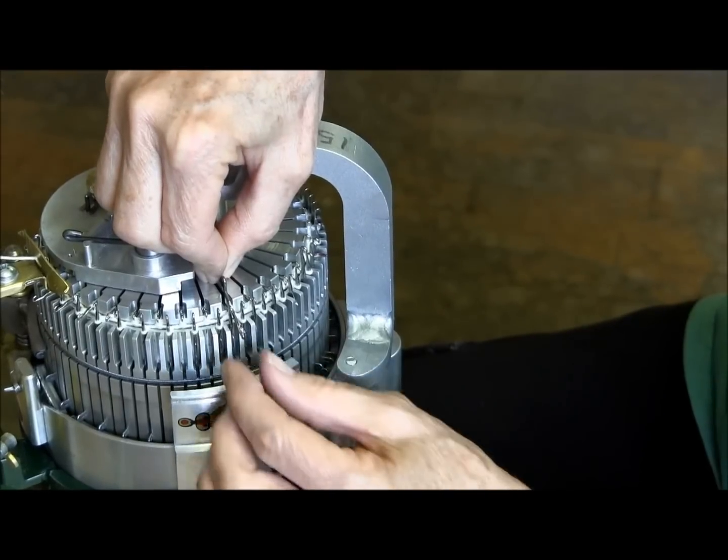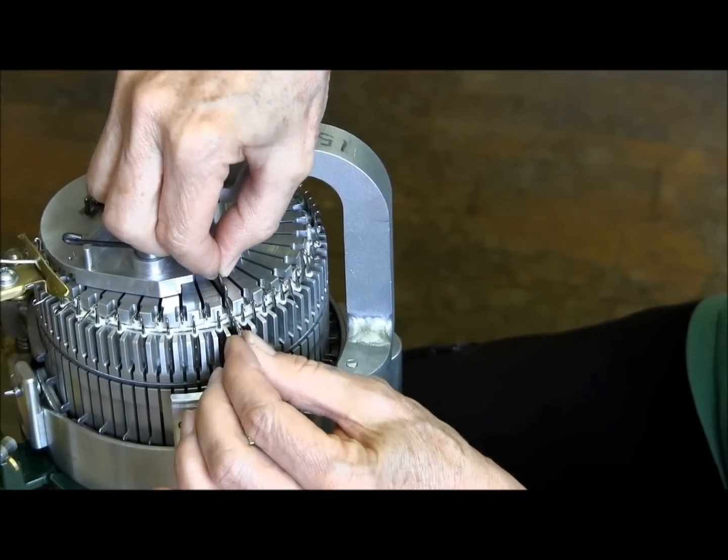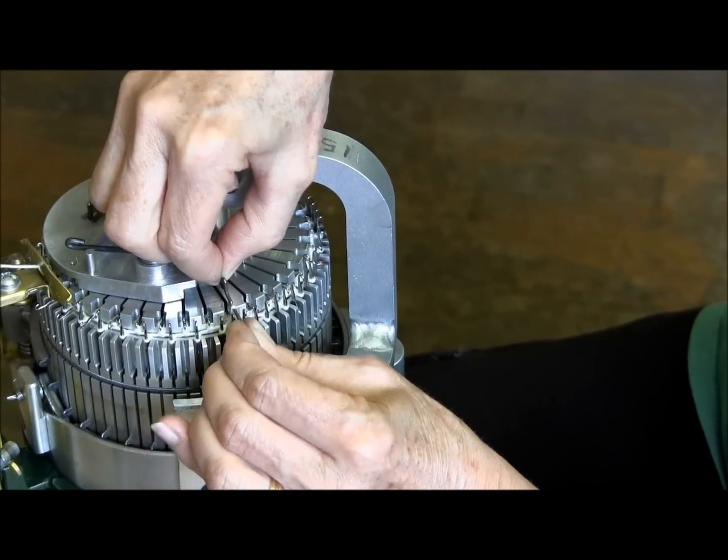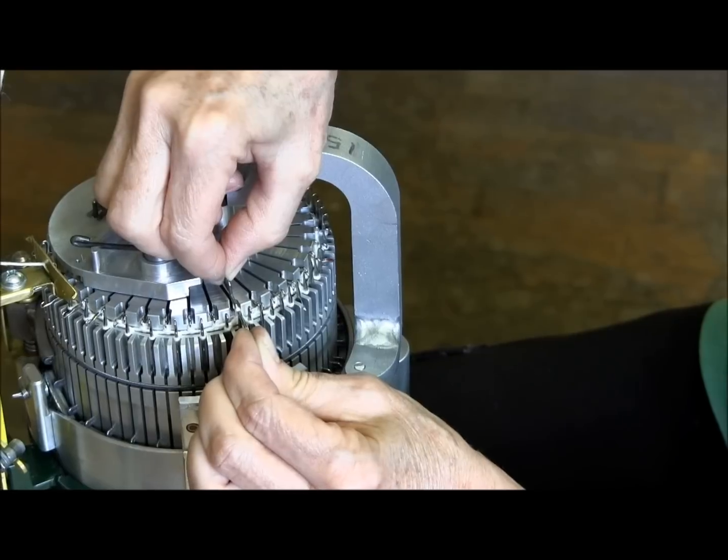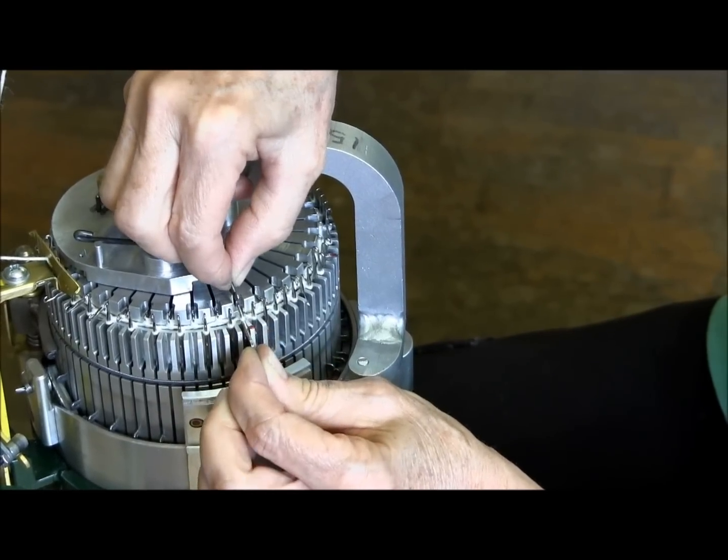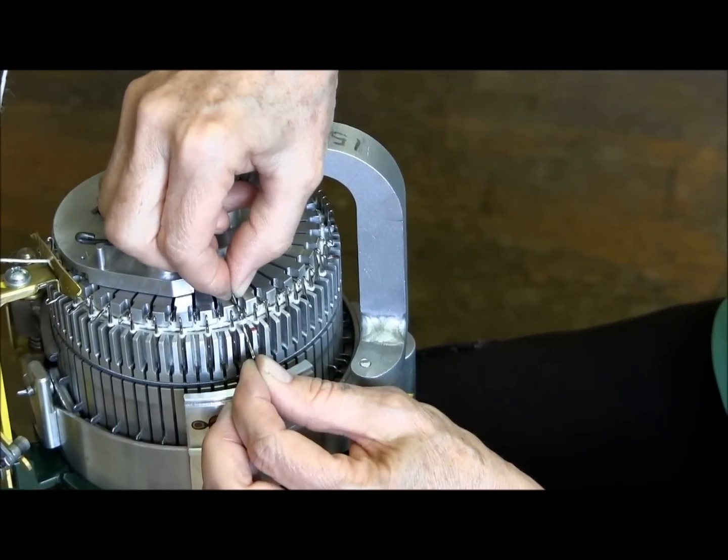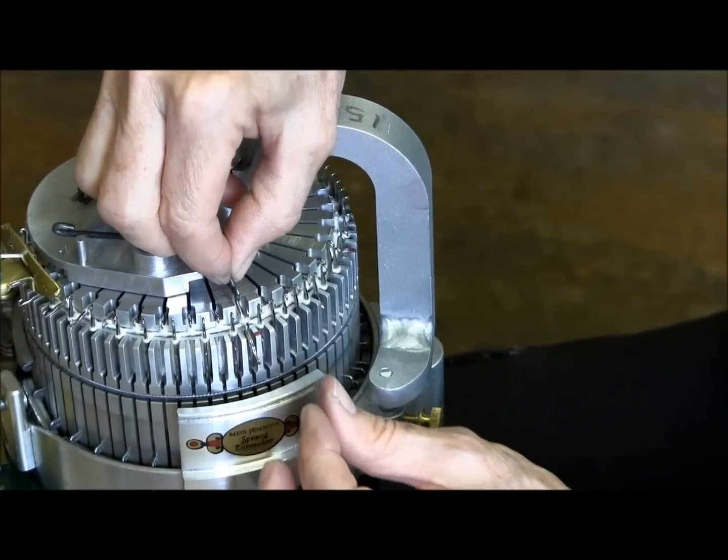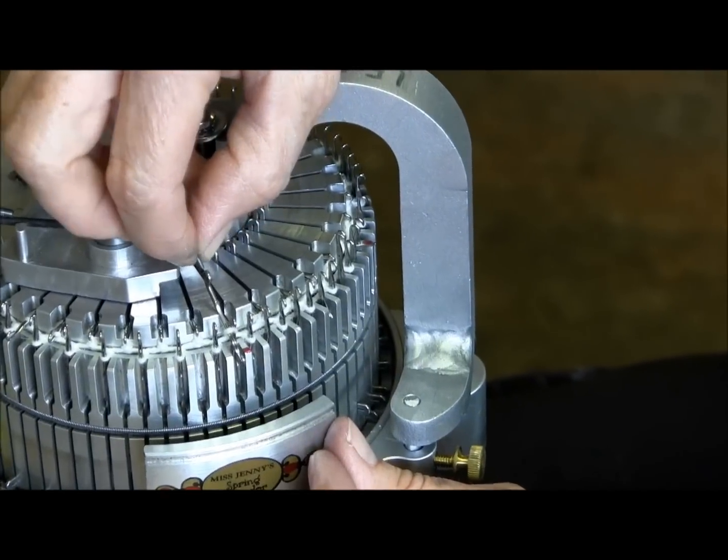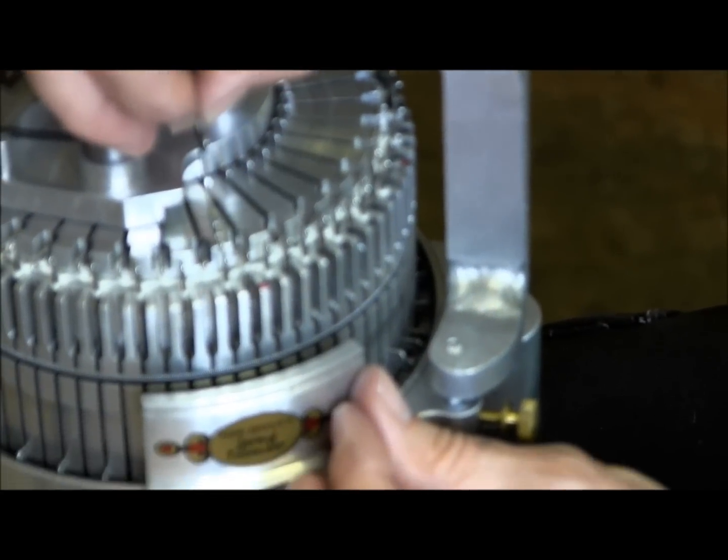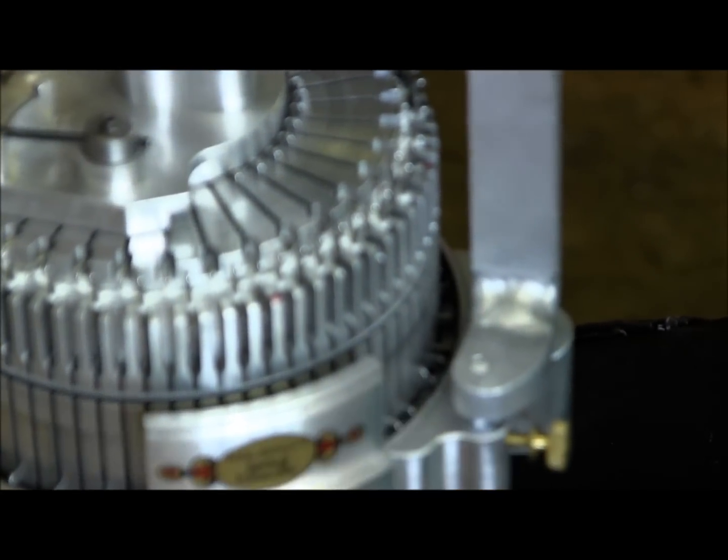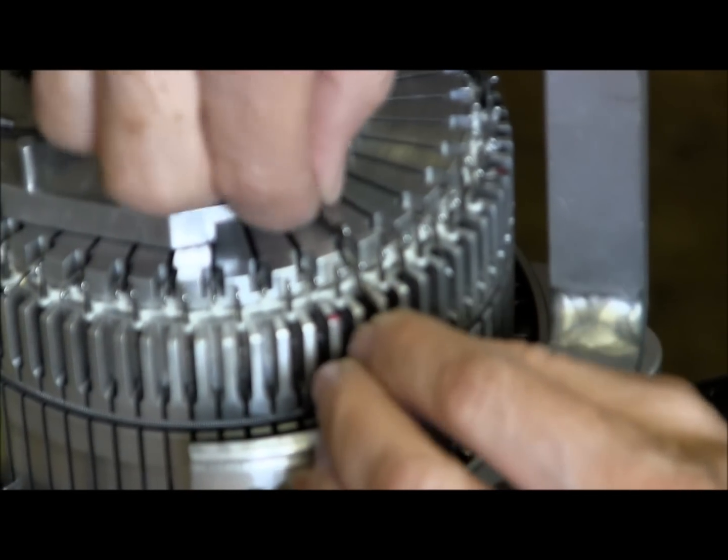The way I transfer stitches, I push the ribber needle out, and my ribber stitch is back behind the latch. I take it across the top of the cylinder needle and I let the stitch catch. I'm trying to get it real close.